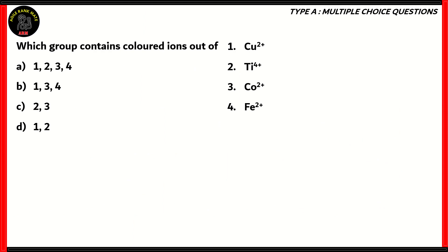Next question. Which group contains colored ions? We have four ions. We need to find out which of these are colored. We have options: (A) 1, 2, 3, 4; (B) 1, 3, 4; (C) 2, 3; (D) 1, 2.